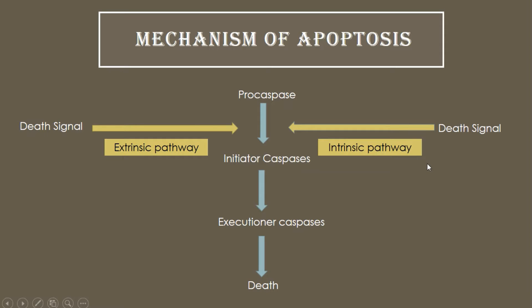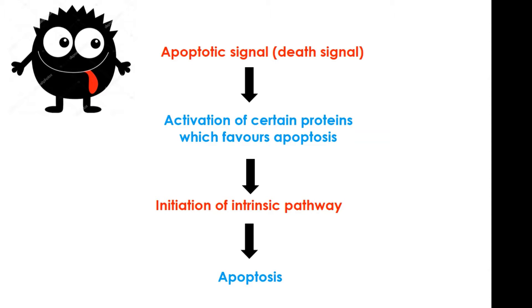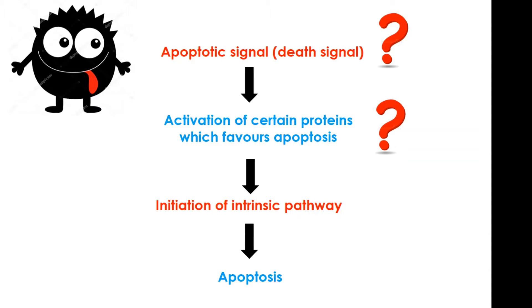Now we will talk about the intrinsic pathway of apoptosis. Just like the extrinsic mechanism, in the intrinsic mechanism there is also a death signal, also called the apoptotic signal. This death signal comes from inside the cell and causes activation of certain proteins which favor apoptosis, initiating the intrinsic pathway. We will address three questions: what are the death signals, what proteins are activated, and what are the steps of the intrinsic pathway.